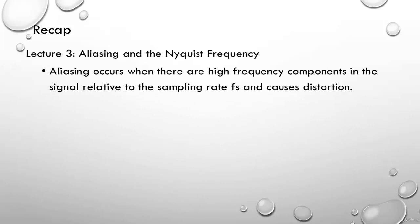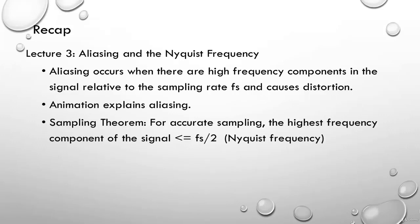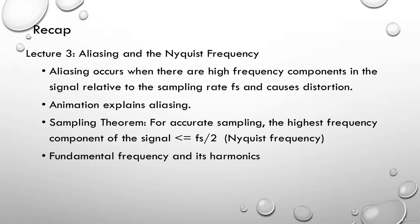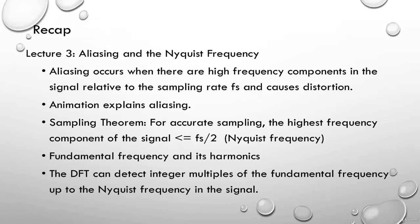In lecture 3, we talked about aliasing and the Nyquist frequency. Aliasing occurs when there are high frequency components in the signal relative to the sampling rate. The sampling theorem says that if the highest frequency component is less than or equal to half the sampling rate — the Nyquist frequency — then the recording will be accurate. The fundamental frequency and its harmonics are key: the DFT detects integer multiples of the fundamental frequency up to the Nyquist frequency.